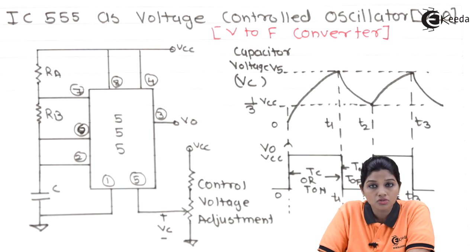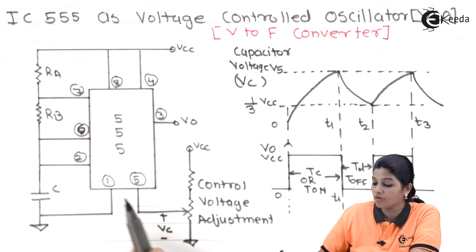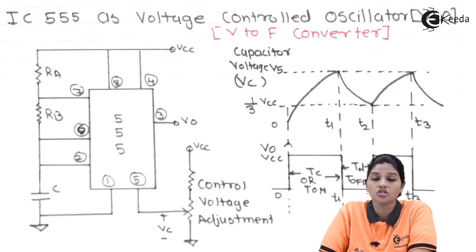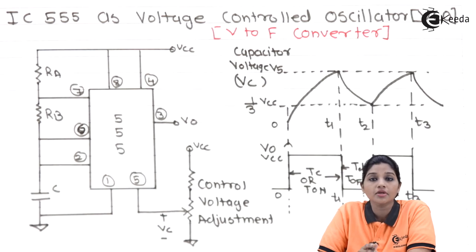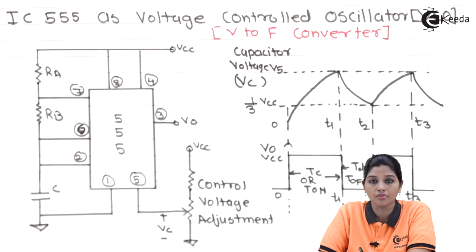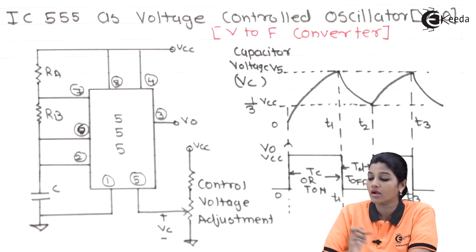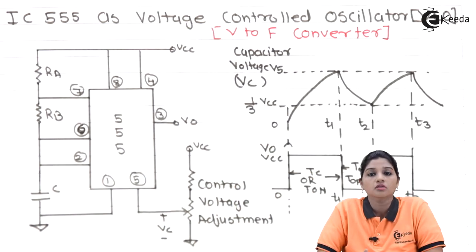So depending upon the voltage present at pin number 5, the charging and discharging time of the capacitor varies. This indicates that depending upon the value of voltage at pin number 5, the frequency changes — because the voltage at pin number 5 changes the input voltage of the lower comparator, which affects charging and discharging time, which in turn affects the total time period, and therefore the frequency. In this way, the input voltage can change the frequency of the output, which is why the circuit is also called V2F — voltage-to-frequency converter.